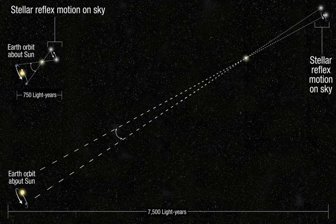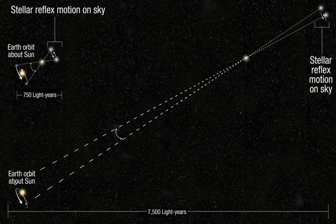Distance measurement by parallax is a special case of the principle of triangulation, which states that one can solve for all the sides and angles in a network of triangles if, in addition to all the angles in the network, the length of at least one side has been measured. Thus, the careful measurement of the length of one baseline can fix the scale of an entire triangulation network. In parallax, the triangle is extremely long and narrow.